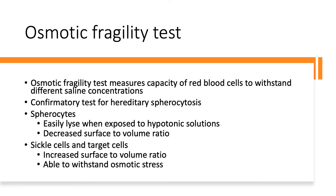The osmotic fragility test measures the capacity of red blood cells to withstand different saline concentrations, and this is actually the test used to confirm hereditary spherocytosis. This is because spherocytes easily lyse when exposed to hypotonic solutions because of their decreased surface-to-volume ratio — spherocytes are already swelled up, and it doesn't take much for them to burst.